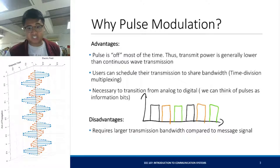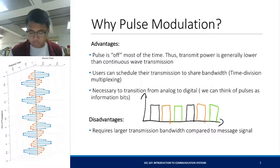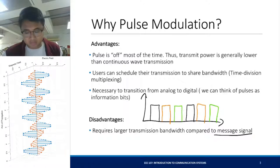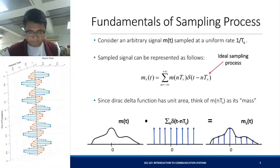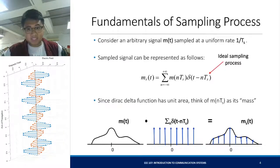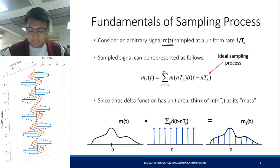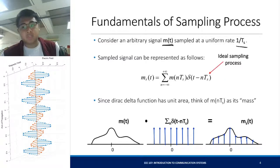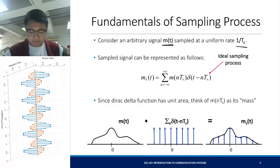A disadvantage is that pulse modulation requires a larger transmission bandwidth compared to the message signal. So before we go there, let's review how sampling works. Consider an arbitrary signal M of T, sampled at a uniform rate 1 over T_S. Your sampled message can now be represented based on that.